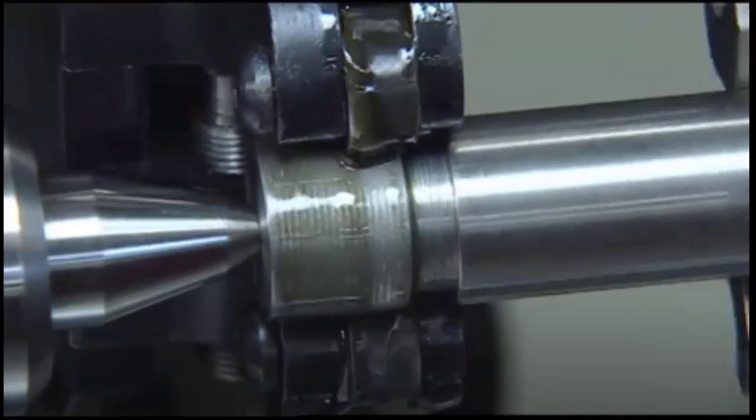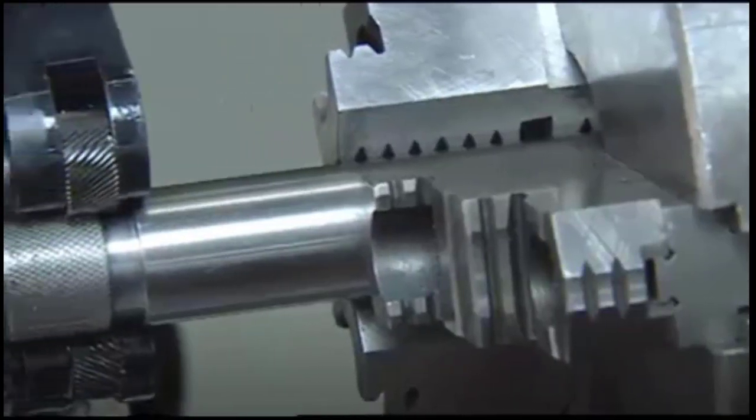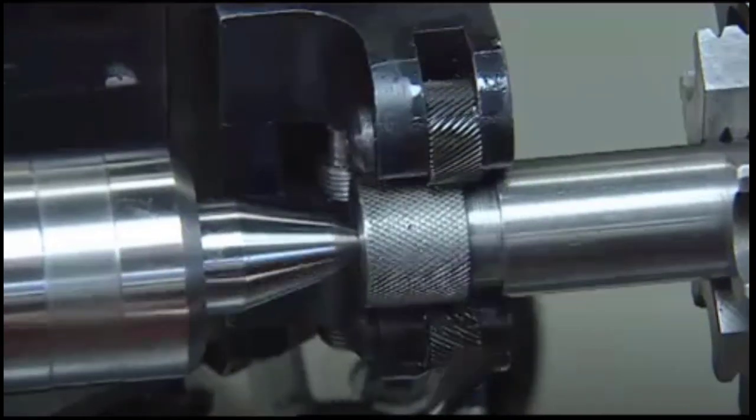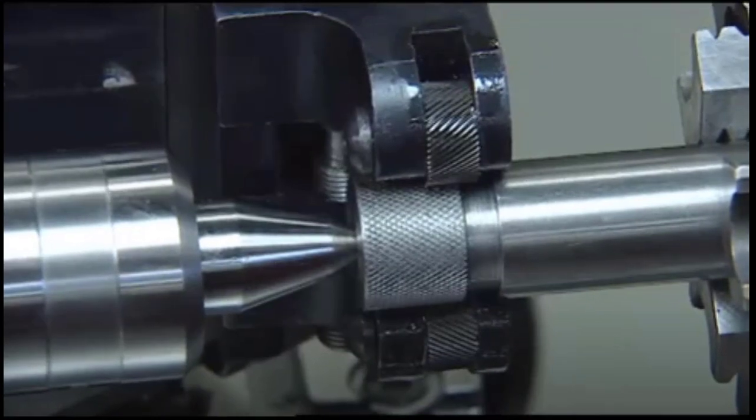Once you've reached the end of the area you're knurling, stop the spindle. Next, clean the fluid and flakes from the part with a brush and check the appearance of the knurls. On most workpieces, the knurl shape is required to come to a full point.